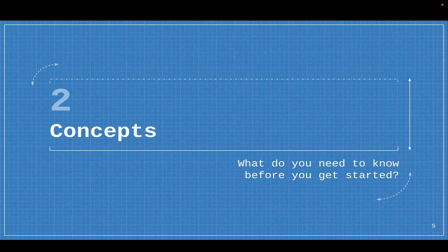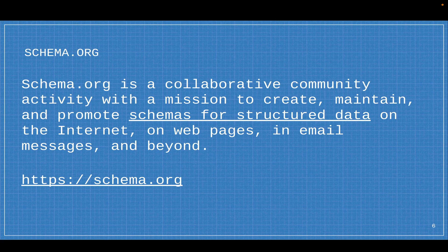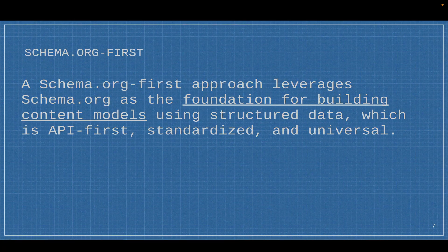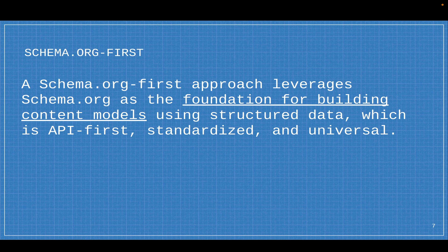Some concepts you need to know before you get started. Schema.org is a collaborative community activity with a mission to create, maintain, and promote schemas for structured data on the internet, on web pages, email messages, and beyond. It is a specification to describe things so that machines, search engines, and AI can understand them. A Schema.org first approach leverages Schema.org as the foundation for building content models using structured data, which is API first, standardized, and universal.